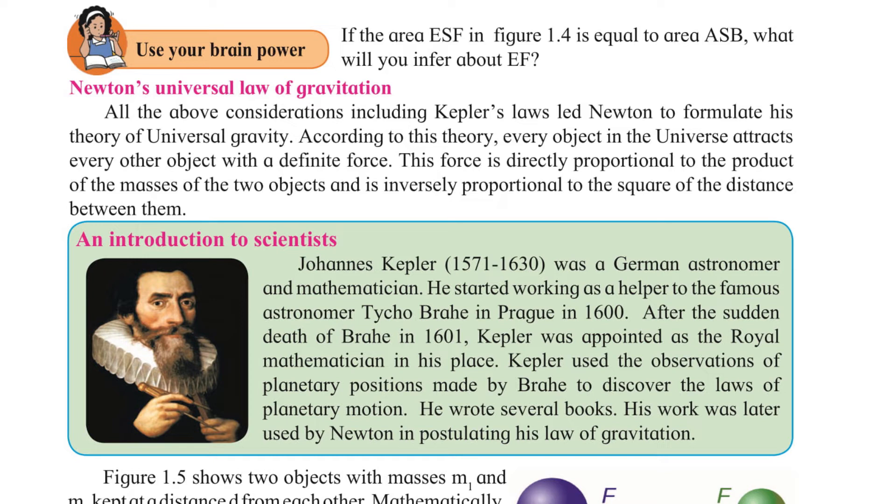Here is a little introduction about Kepler. Johannes Kepler was a German astronomer and mathematician. He started working as a helper to the famous astronomer Tycho Brahe in 1600. After the sudden death of Brahe in 1601, Kepler was appointed as the royal mathematician in his place.